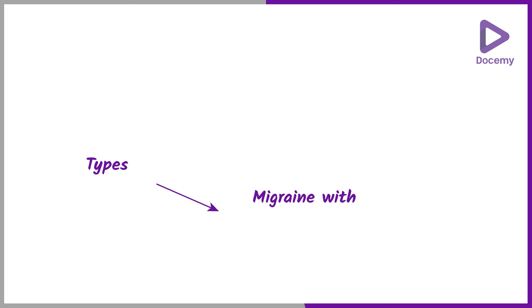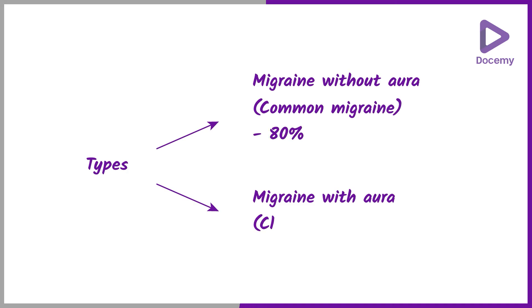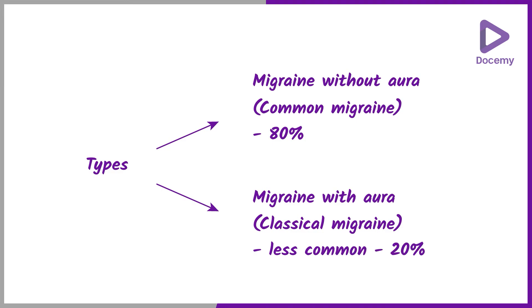There are two main types of migraine: migraine with aura and migraine without aura. Migraine without aura is called common migraine, seen in 80 percent of cases, and migraine with aura is called classical migraine, which is less common, seen in 20 percent.